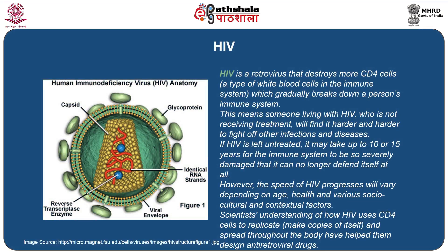HIV is a retrovirus that destroys the CD4 cells, which are a type of white blood cells in the immune system, which gradually breaks down a person's immune system. Someone living with HIV who is not receiving treatment will find it harder and harder to fight off other infections and diseases. If HIV is left untreated, it may take up to 10 to 15 years for the immune system to be so severely damaged that it can no longer defend itself. However, the speed of HIV progress will vary depending on the age, health and various socio-cultural and contextual factors.